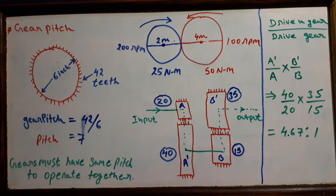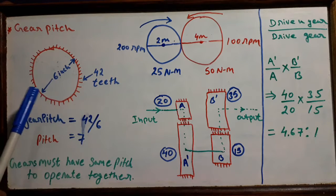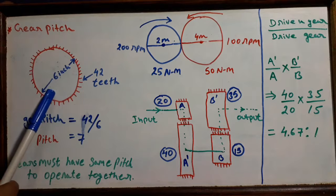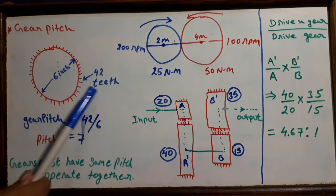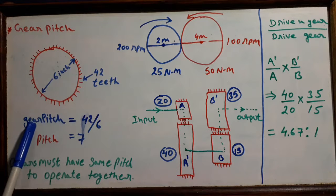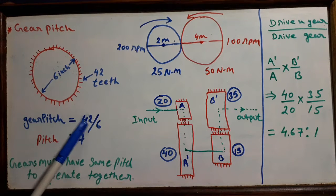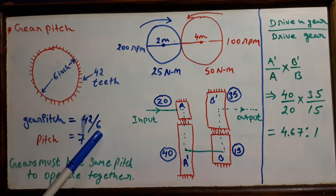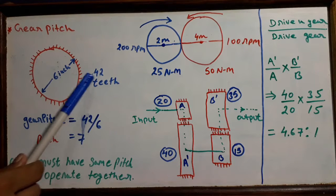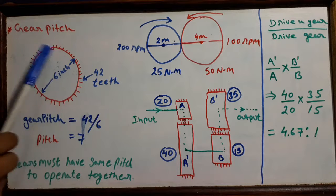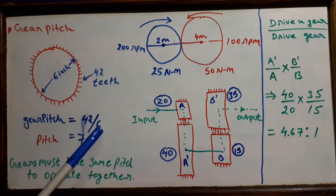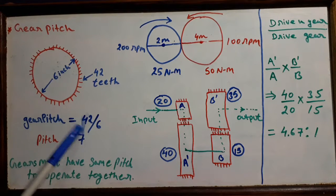For example, we have a gear here and 6 inch is the diameter of this gear, and we have 42 teeth on this gear. So gear pitch will be 42 divided by 6. 42 is the number of teeth and 6 inch is the diameter of the gear. Dividing this will result in 7, and the pitch is 7.